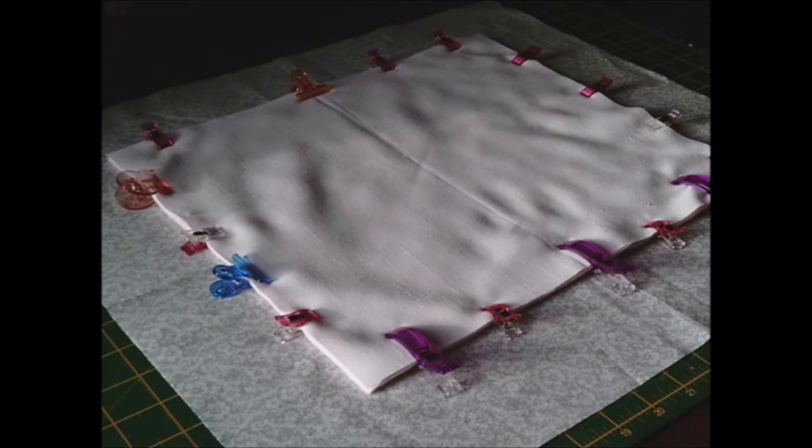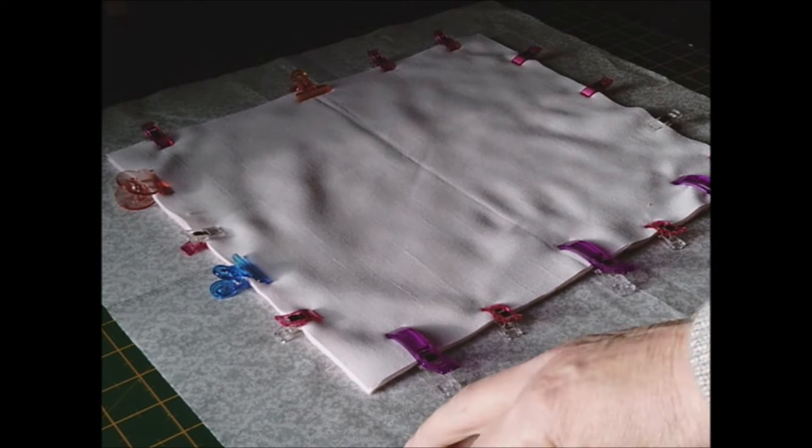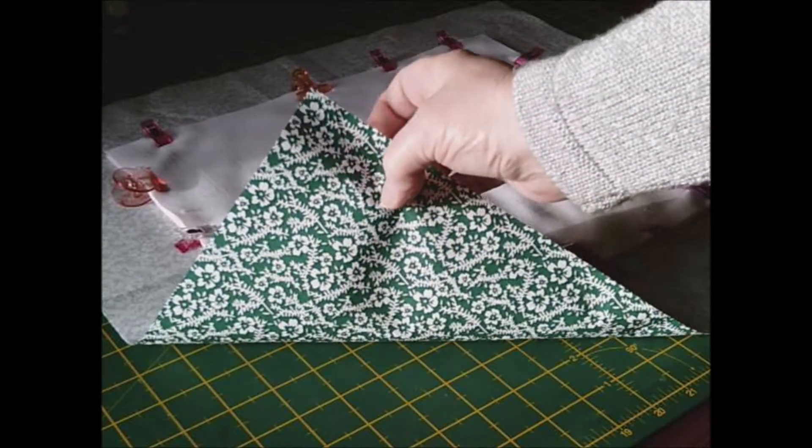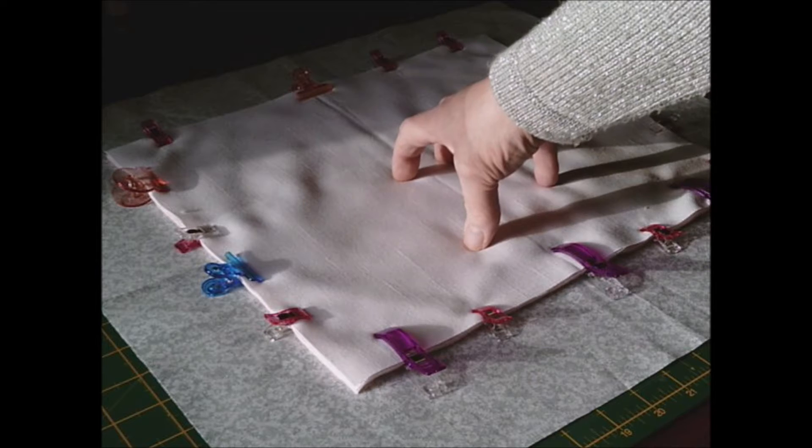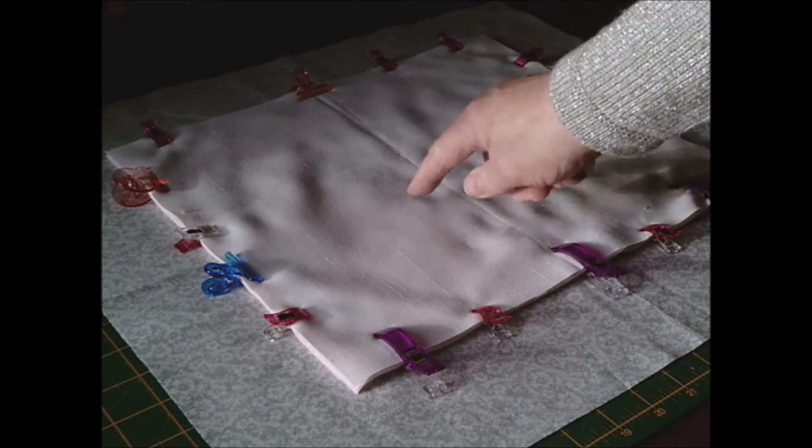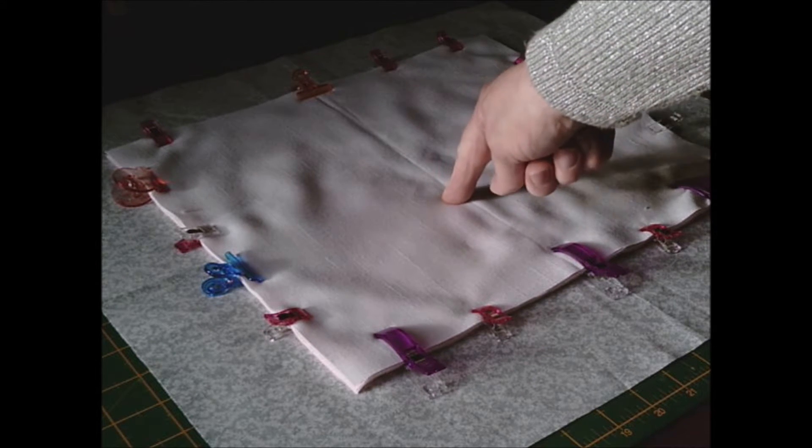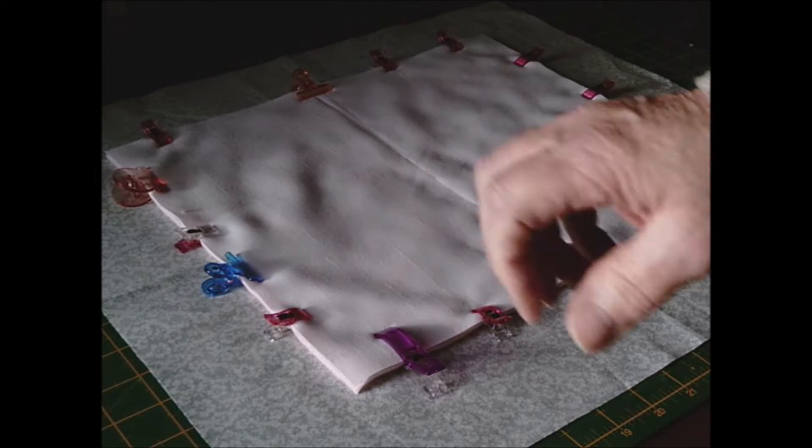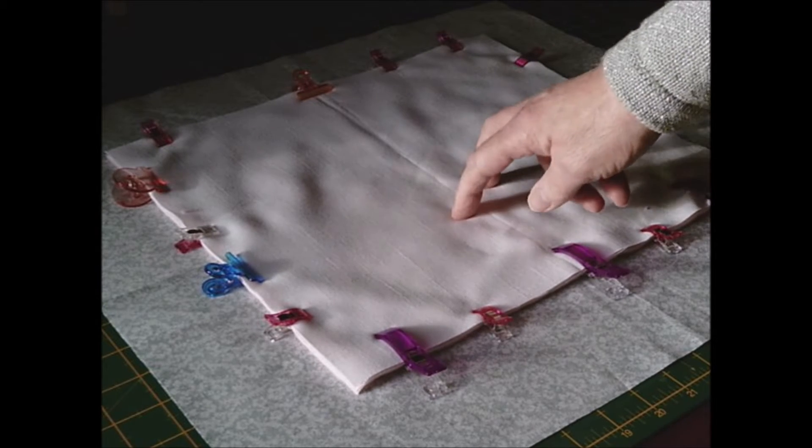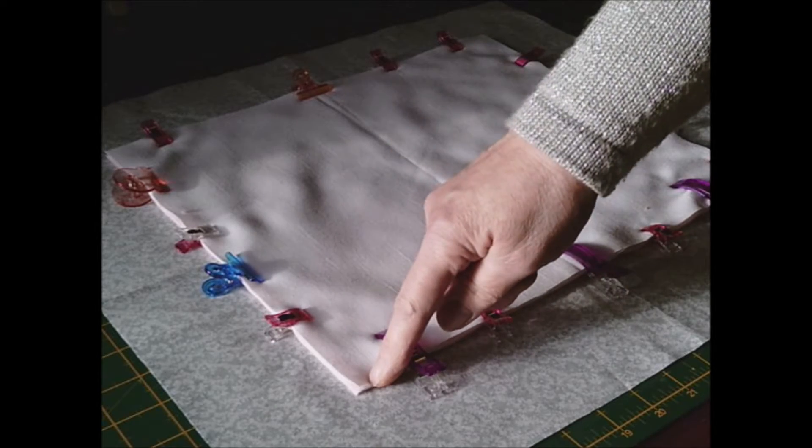We're going to make a placemat. I've got 100% cotton for the pattern fabric. If you remember a few videos ago, I got these from a charity shop - white linen napkins, brand new, 100% white linen cotton.